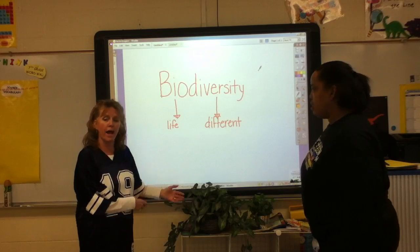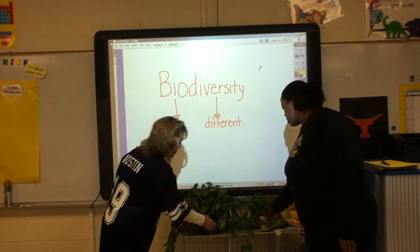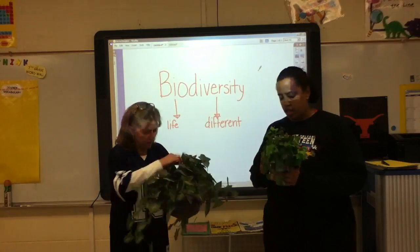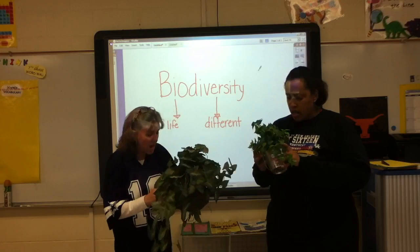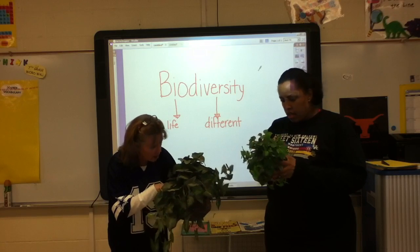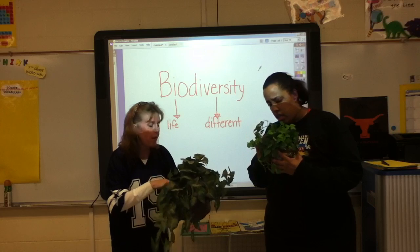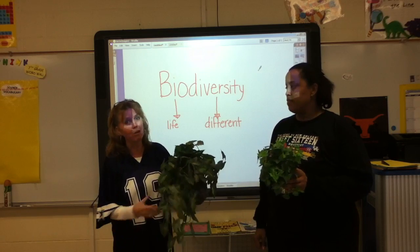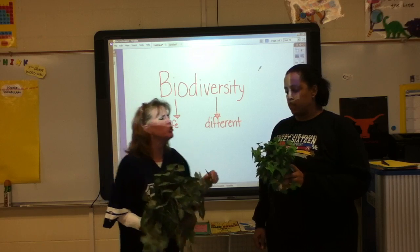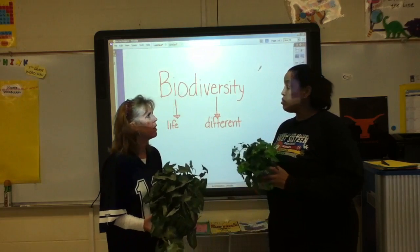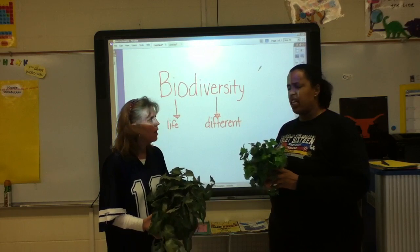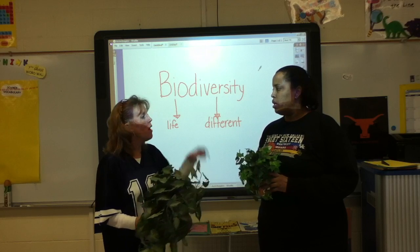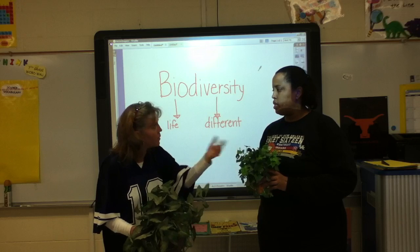Coach King and I both have plants here. I'm going to take a look at mine. There are ten beetles inside this plant, Coach King — ten beetles, but only two different species. That means only two different kinds of beetles out of those ten. What did you get? I found ten beetles too, but I happen to have five different species of beetles.